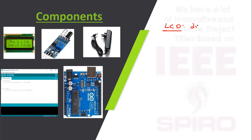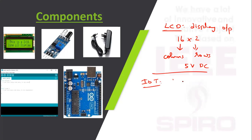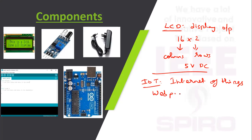The LCD is used to display the output. It is a 16x2 LCD — 16 columns and 2 rows — operating at 5V DC. IoT stands for Internet of Things. Any combination of hardware and software can have its output monitored or controlled using IoT technology. In our project, we use a web page for monitoring. The user can open the web page and check which parking slot is free. For example, if a person is going out, they can open the web page and check which slot is available before parking.